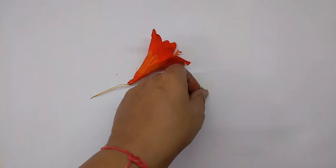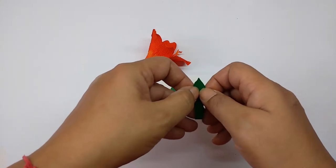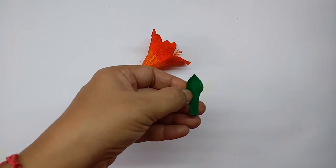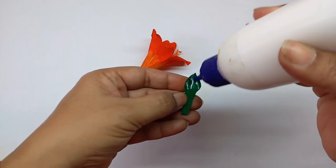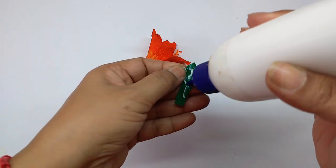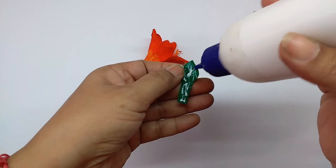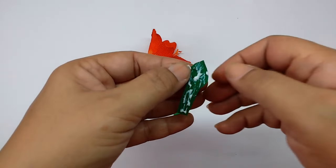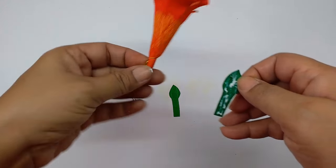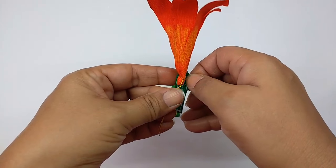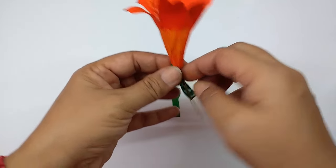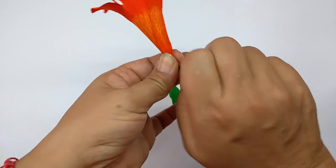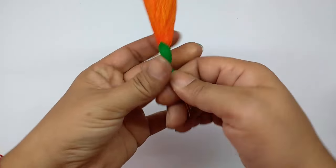Now take the two sepals and as we did for the bud, first just stretch the top part. Apply glue, even on the stem, and stick this on one side of the base, just covering the wire. Then twist the stem on the wire.